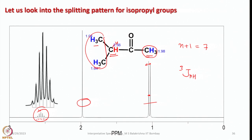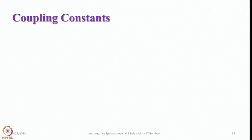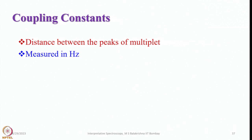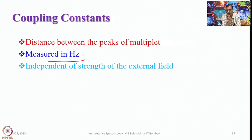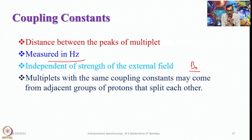The expansion clearly shows 1, 2, 3, 4, 5, 6, 7 lines for the septet. The distance between peaks of a multiplet measured in hertz is called the coupling constant. Coupling constants are always measured in hertz and are independent of the strength of the external field. Similarly, chemical shifts presented in ppm are also independent of the external field. Multiplets with the same coupling constants may come from adjacent groups of protons that split each other.